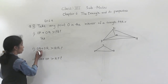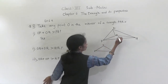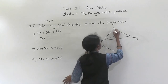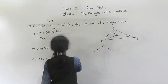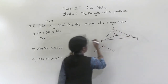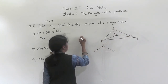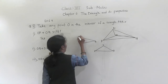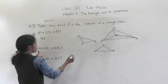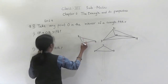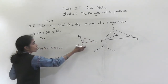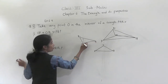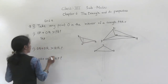Next, OQ plus OR. In triangle OQR, OQ plus OR is greater than QR. The sum of the lengths of two sides of a triangle is greater than the third side. So OQ plus OR is greater than QR — this is also proved.